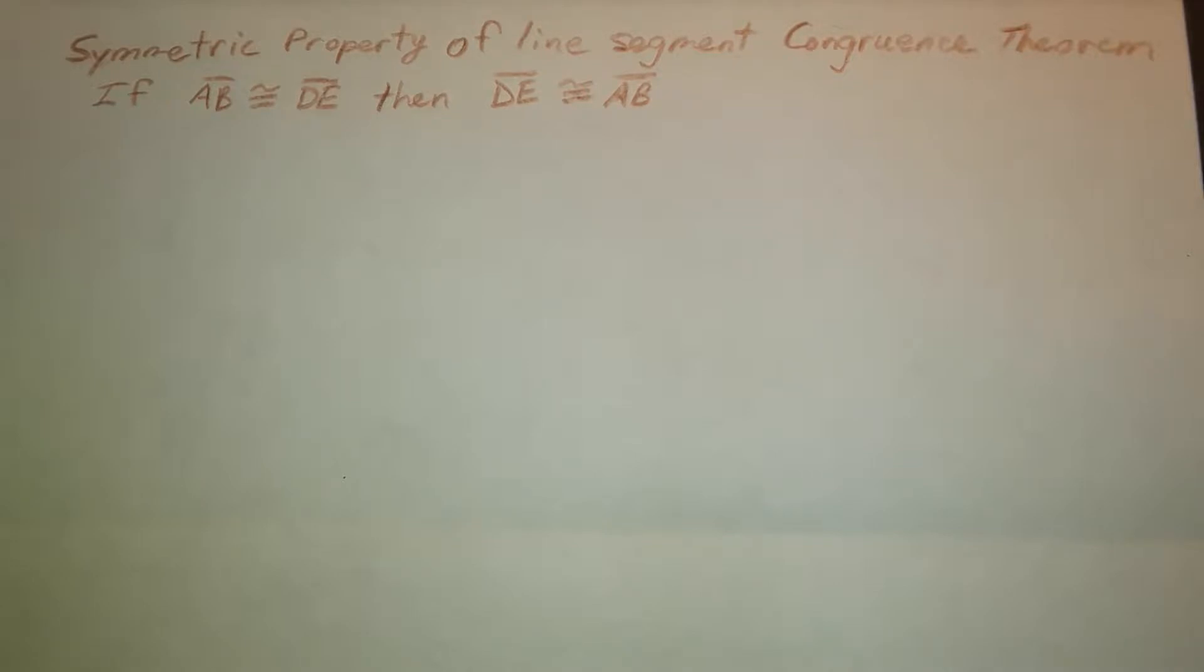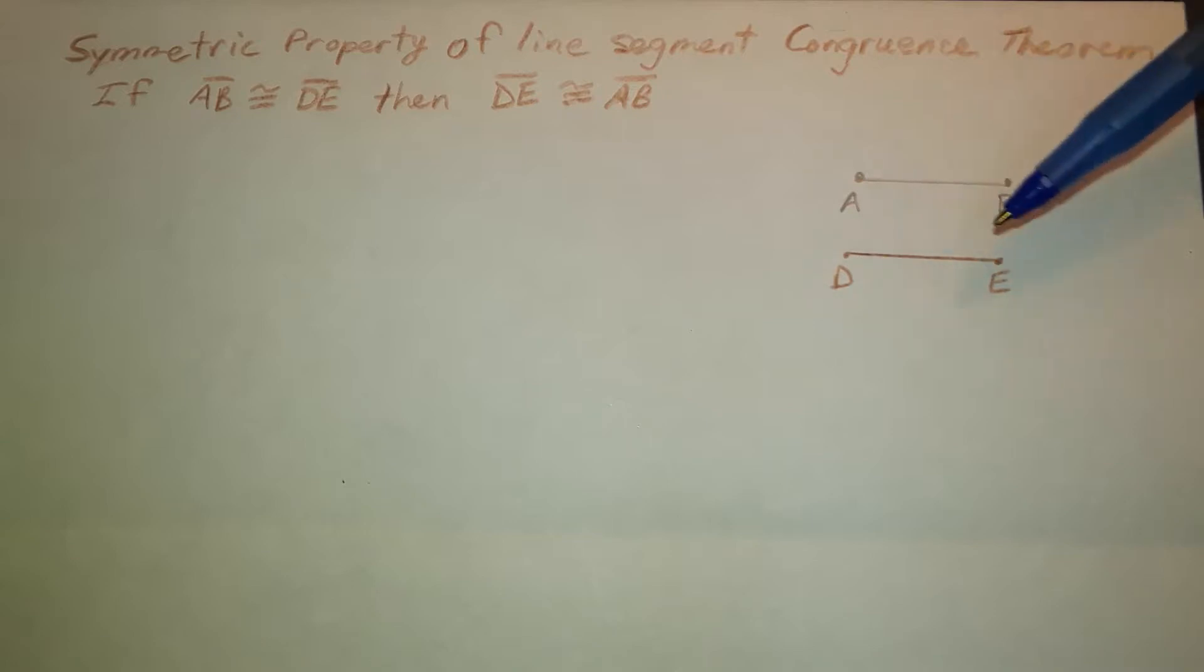One of the ways that we can begin to get an idea is to draw a sketch. So that's the first thing that I'm going to do. The sketch that I have drawn shows segment AB and DE, and from my sketch, they appear to be the same length, and so would fit the definition of congruence.